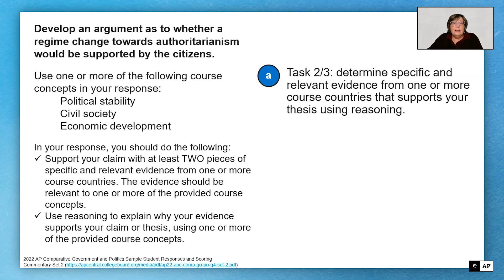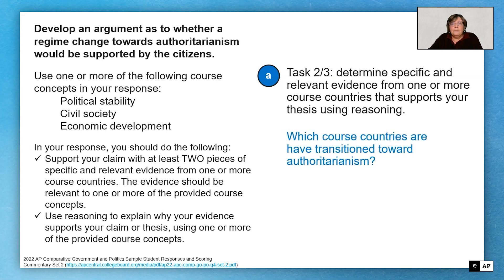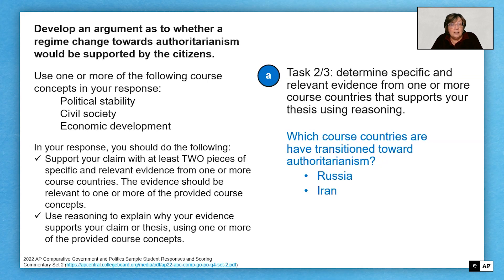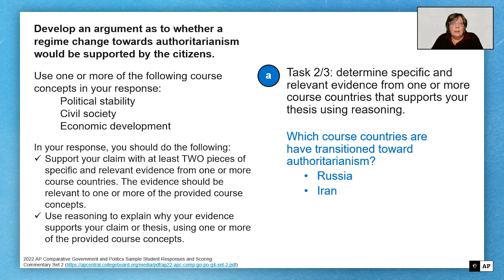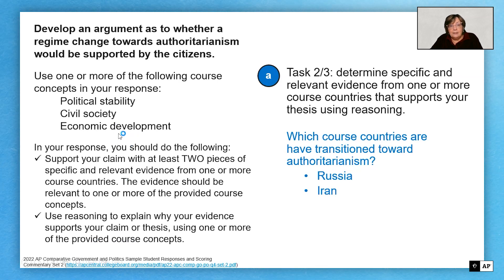Now let's talk about the evidence. I have to figure out which countries I'm going to use. For this video, I focused on the two that tend to be more authoritarian and have more transition in them, which would be Russia and Iran. Remind yourself that it says you're going to have two pieces of evidence from one or more course countries. You can have two pieces of evidence from one country, but that's hard — to be specific enough on the same country. My general recommendation is to use two different countries. If you're going to use one country, make sure you specifically state the first and second pieces of evidence. The reasoning must tie back to one of the course concepts that is in your line of reasoning.